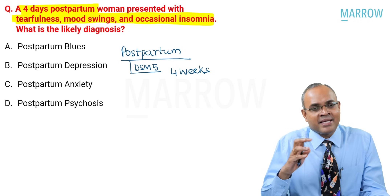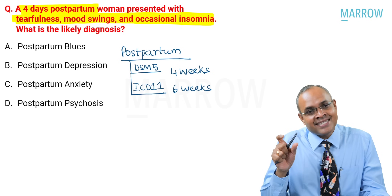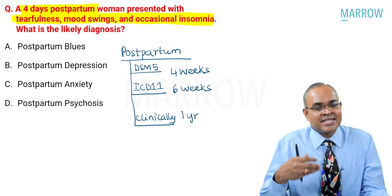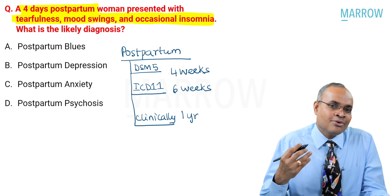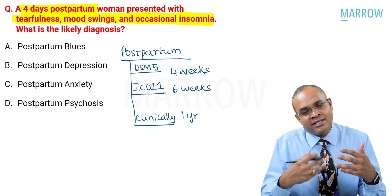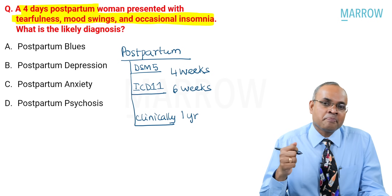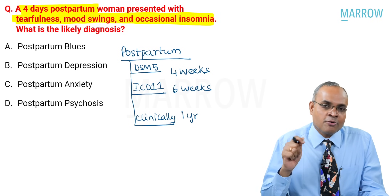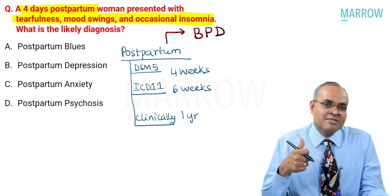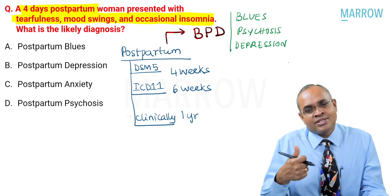To understand the postpartum period: as per DSM it is about four weeks, as per ICD it is about six weeks. Clinically, the risk of all conditions can persist for six months to one year postpartum. In the postpartum period, it is good to know the BPD framework — here referring to blues, psychosis, and depression.